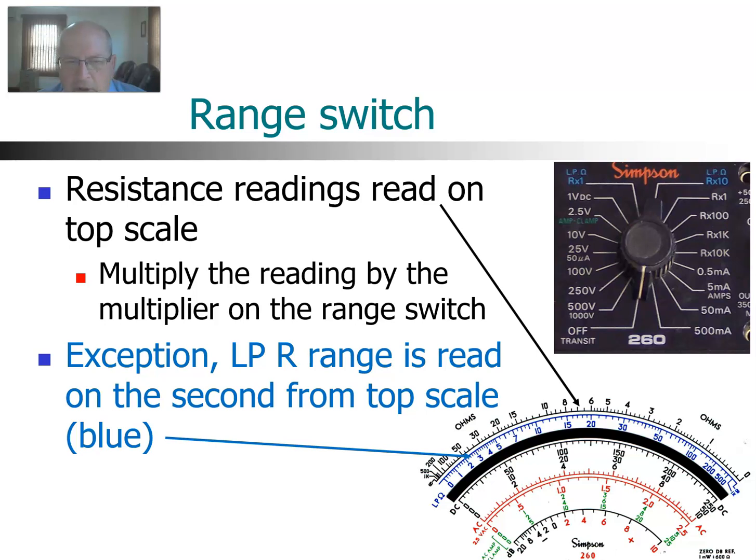The next scale down is low power resistance. That is a way of measuring resistance inside of a circuit when the components are still connected to other components. When you're actually measuring resistance with a meter, you apply a voltage and the meter measures the current and then translates that into a resistance. With the low power scale, the voltage that is applied is small enough that it will not forward bias any semiconductors. So your transistors will not be turned on and therefore will not interfere with the resistance measurement. That gives you a more accurate reading if you're doing in-circuit resistance measurements. Just to remind you, it is always better to measure resistance out of the circuit, but that's not always practical.